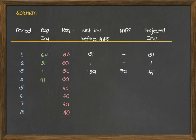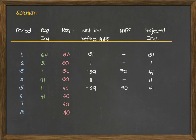Period 4: beginning inventory is 41, and 41 minus 30 is 11. No value for MPS, so projected inventory is 11 units. Period 5: beginning inventory is 11, and 11 minus 40 is negative 29, so we have an MPS again. Negative 29 plus 70 gives an inventory of 41 units. Then 41 units minus 40 gives 1. No MPS for period 6.